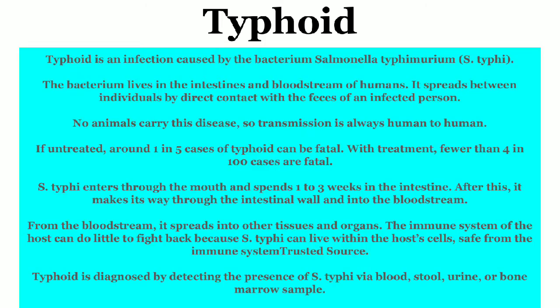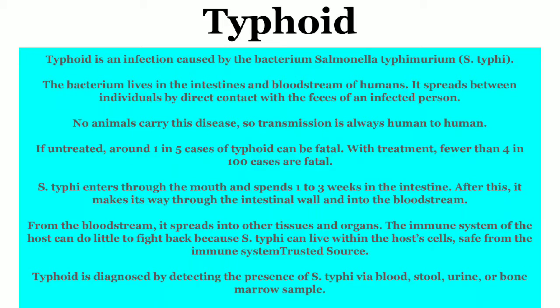S. typhi enters through the mouth and spends one to three weeks in the intestine. After this, it makes its way through the intestinal wall and into the bloodstream. From the bloodstream, it spreads into other tissues and organs. The immune system of the host can do little to fight back because S. typhi can live within the host cells, safe from the immune system.